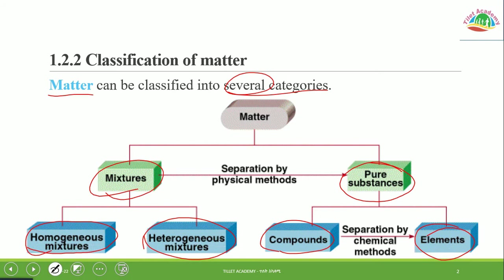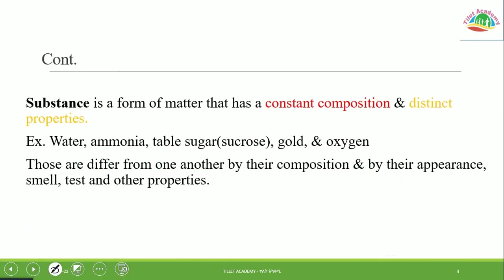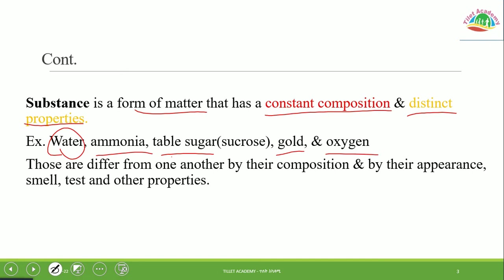Looking at the diagram — what is a substance? A substance is a form of matter that has constant composition and distinct properties. Examples of substances include ammonia, table sugar, gold, and oxygen.